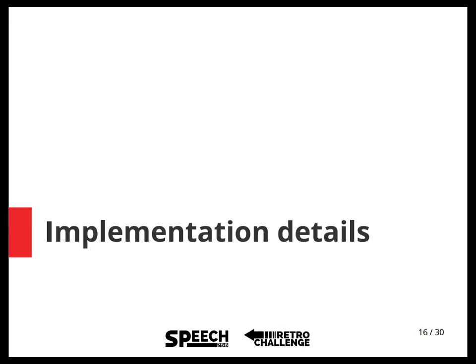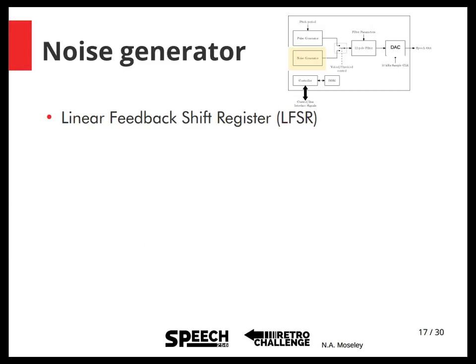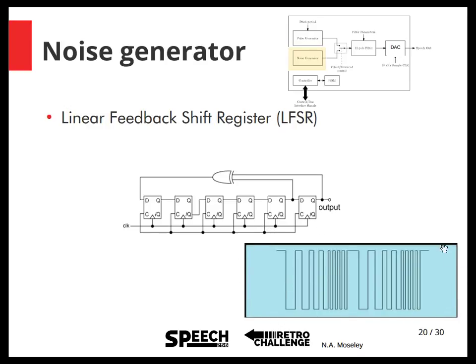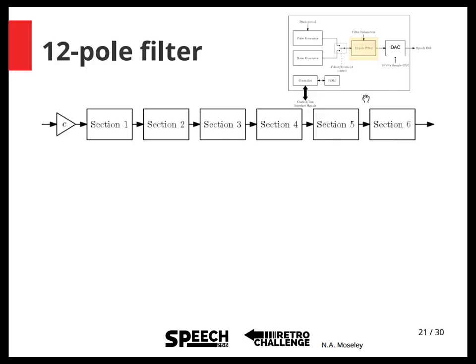Now that we've seen the block diagram, how do we actually implement those blocks on an FPGA? I won't cover the pulse generator because it's trivial — it's basically a counter that produces a pulse every once in a while. The other half of the source is the noise generator, and we can implement this using a linear feedback shift register. These are well-known structures consisting of flip-flops and one or more XOR gates, where the output and intermediate results are fed back via the XOR gate to the input, generating a pseudo-random 1-bit noise signal.